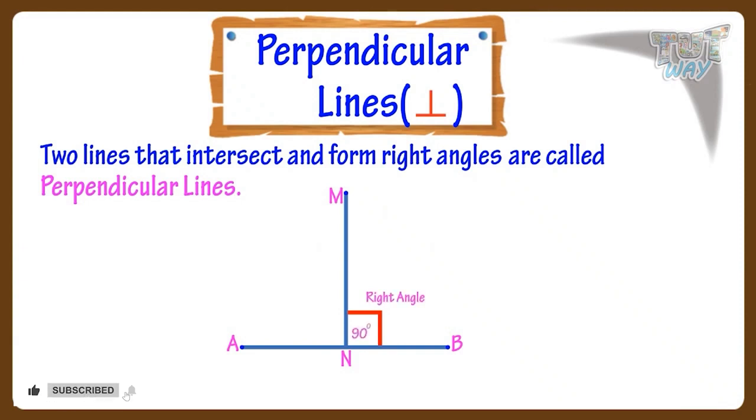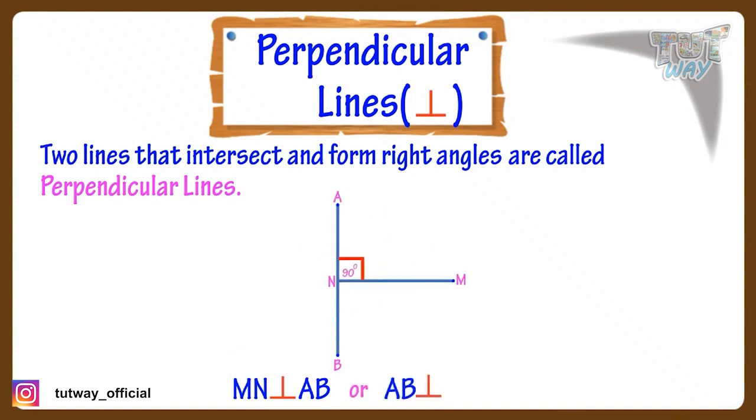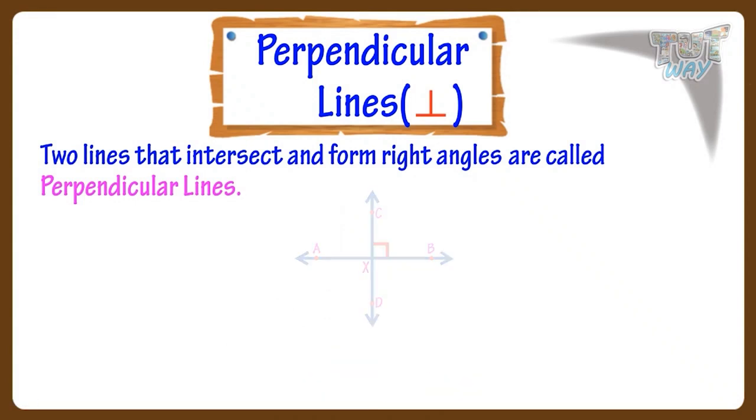This is the symbol that is used to denote perpendicular lines. Here the line MN is perpendicular to line AB, or line AB is perpendicular to line MN.